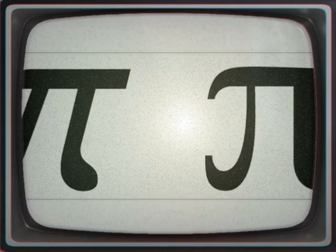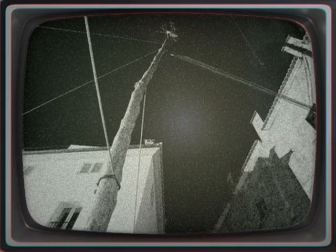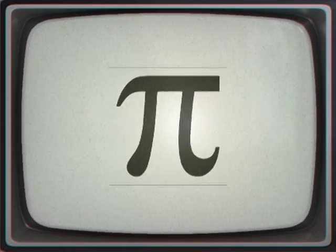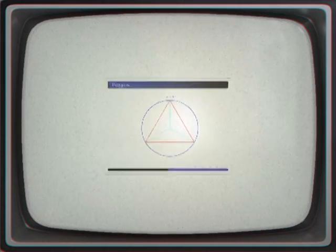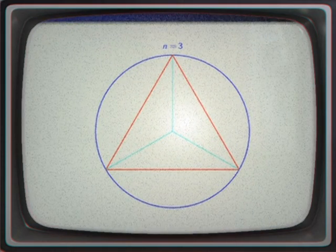Being an irrational number, pi cannot be expressed exactly as a common fraction. Consequently, its decimal representation never ends and never settles into a permanent repeating pattern. The digits appear to be randomly distributed, although no proof of this has yet been discovered.